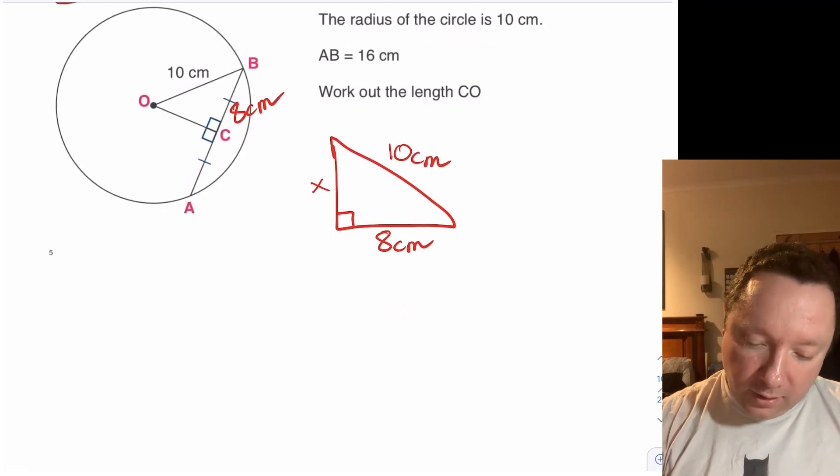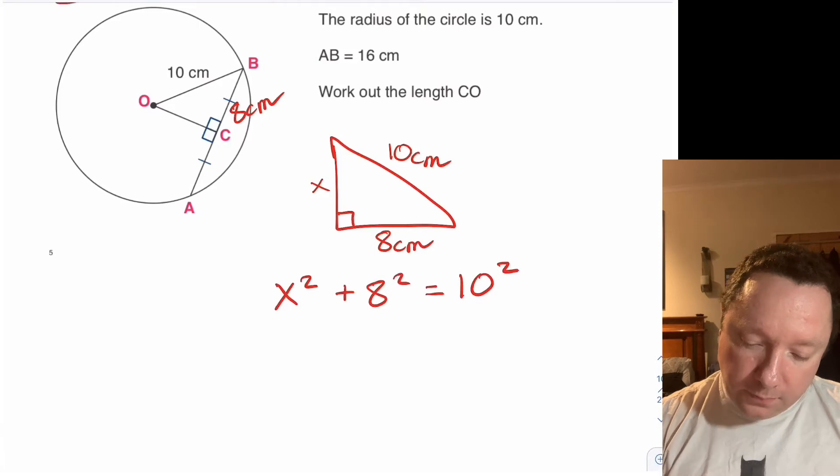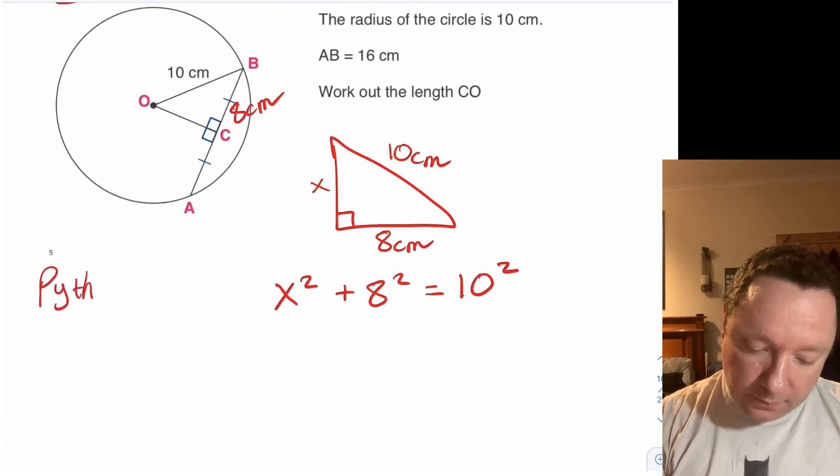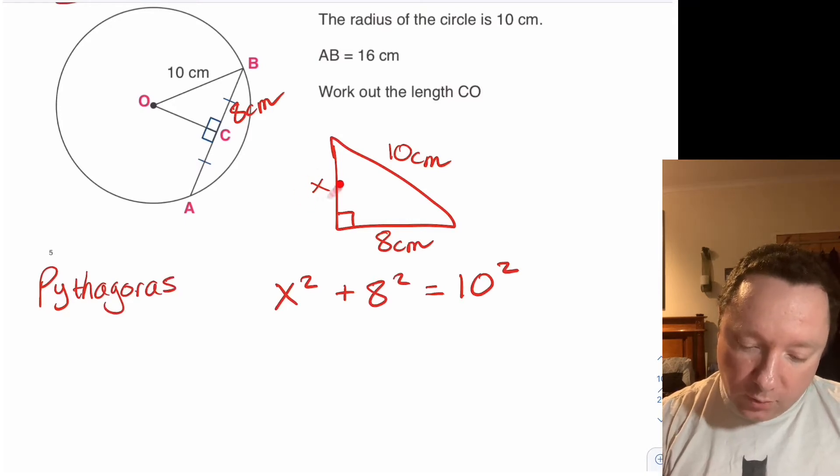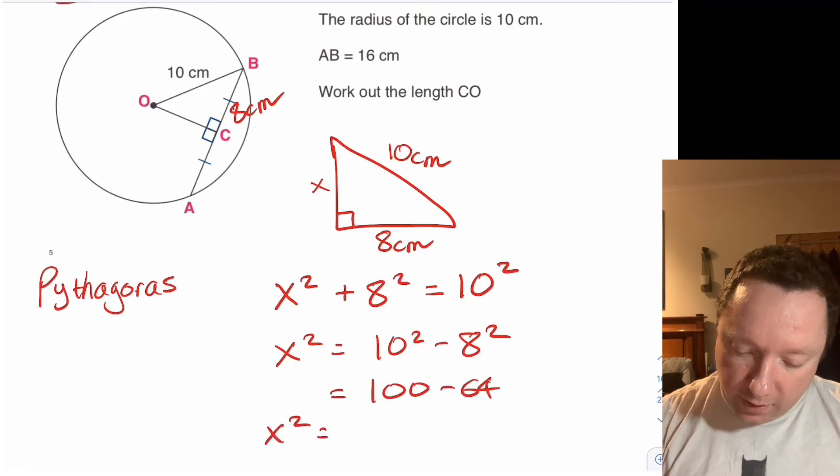So by Pythagoras, x squared plus 8 squared equals 10 squared. Which means we're finding one of the short sides so we need to take away to get it. So x squared equals 10 squared minus 8 squared. It's 100 minus 64. So x squared is 36. Which means x is the square root of 36, which is 6 centimetres.